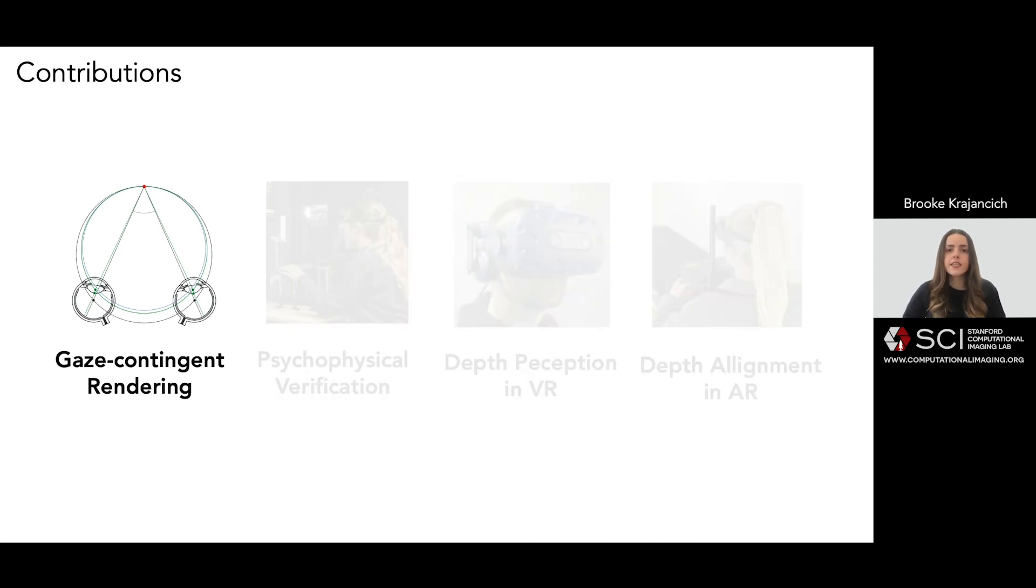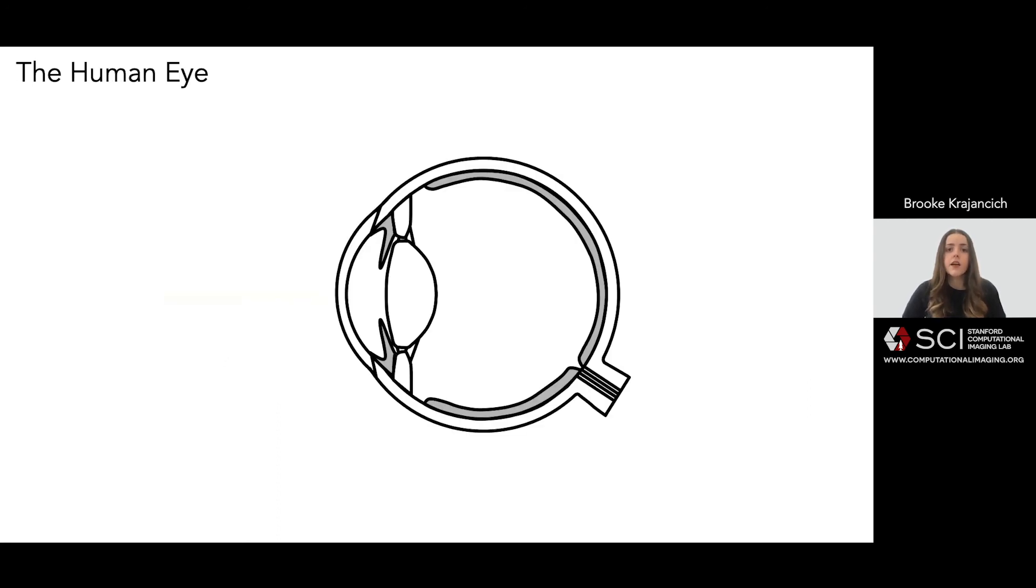But first, to understand why conventional stereo rendering is inaccurate, we can look to the key axes and points in the human eye. Currently, disparity is calculated by tracing the optical axis of the eye, or the line that connects the anterior vertex of the cornea B with the center of rotation C.